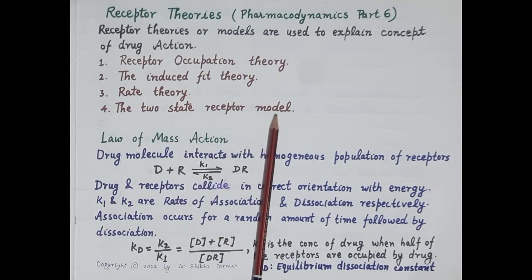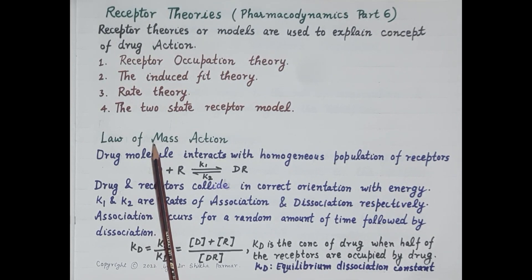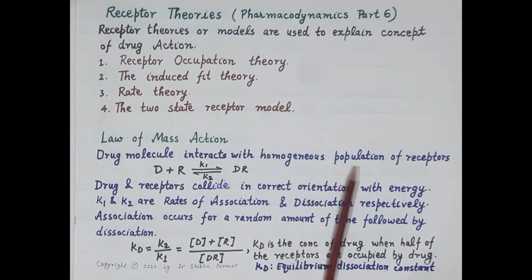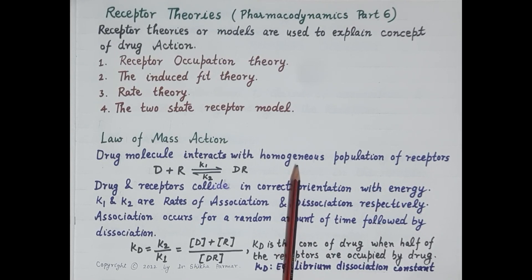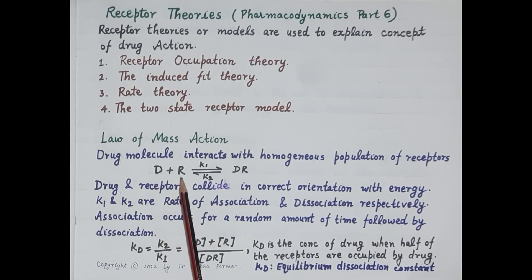As we all know, a drug first binds to a receptor, then interacts with or activates the receptor, and this interaction is converted into a physiological response. The molecular interaction of a drug with a receptor obeys the law of mass action. When a drug molecule interacts with a homogeneous population of receptors — that is, the same type of receptors — a drug-receptor complex is produced, and the relationship is expressed by this equation.